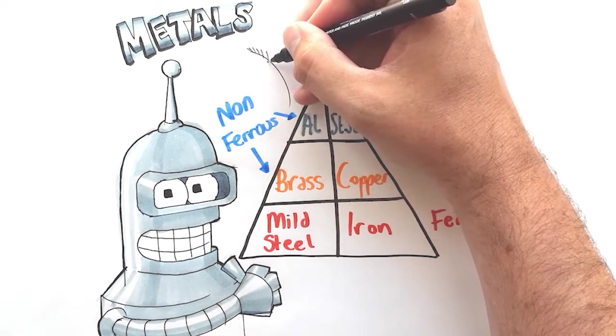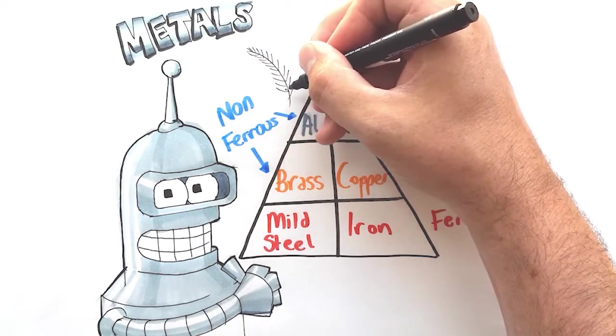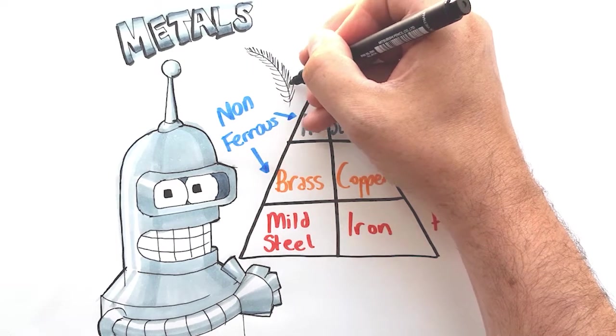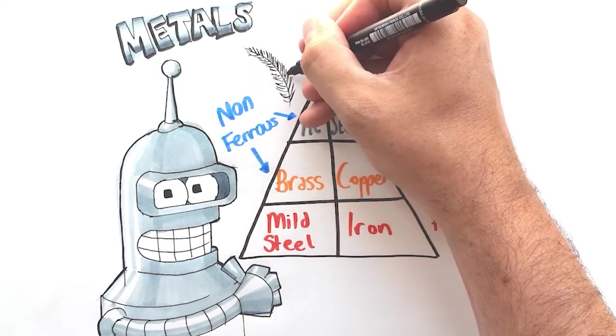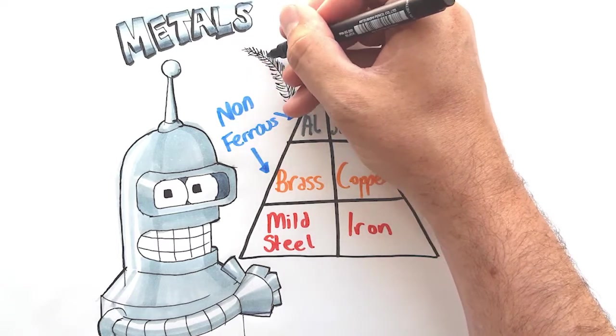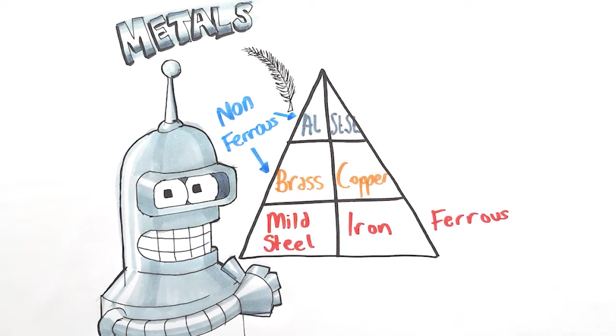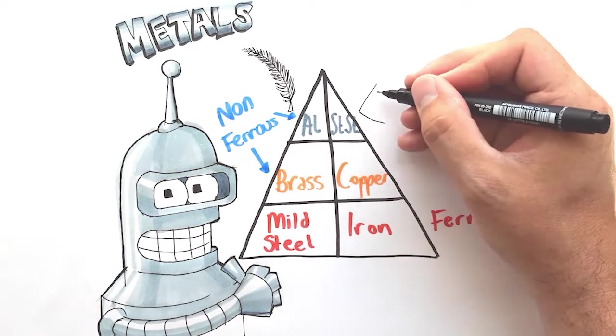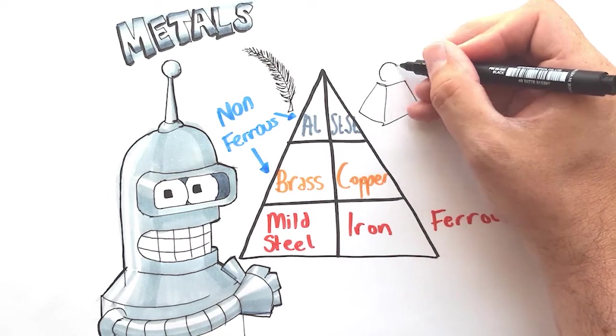So as I mentioned earlier about aluminium being very lightweight, what I want to do to try and help you remember that is on the left hand side I'm going to draw a feather. This is to represent the aluminium as very light. On the other side I'm going to draw this heavy acme weight. Stainless steel is actually very heavy.